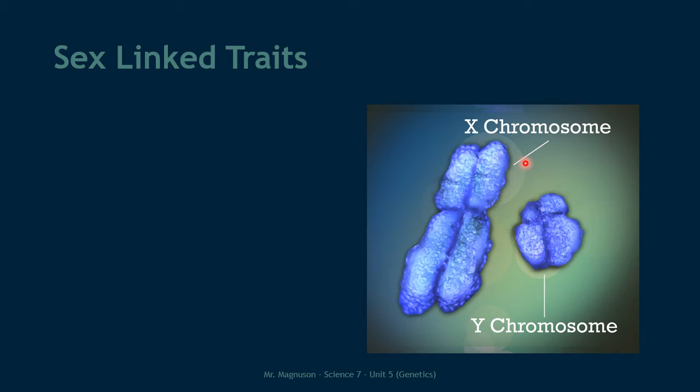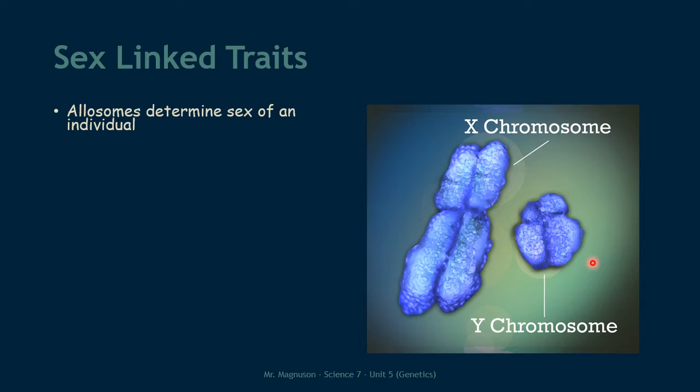So again, remember that the X chromosome is a lot bigger than the Y chromosome. Chromosomes are where the instructions are to build proteins — those are called genes. Because of the difference in size, there are a lot of genes, a lot of instructions, that are on the X chromosome but not the Y chromosome. We call these allosomes because they determine the sex of an individual. But remember, most of those genes do things other than just make someone male or female — they control traits other than sex.